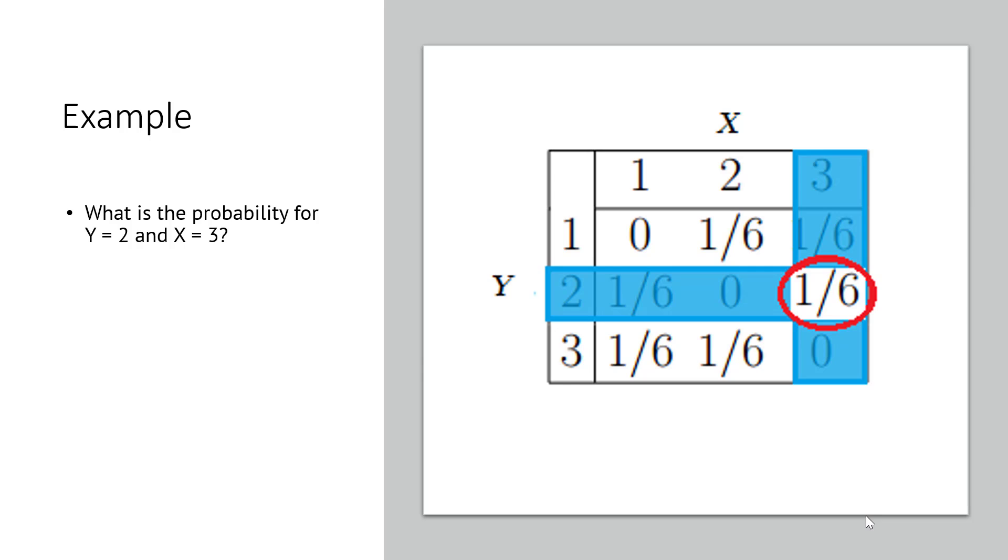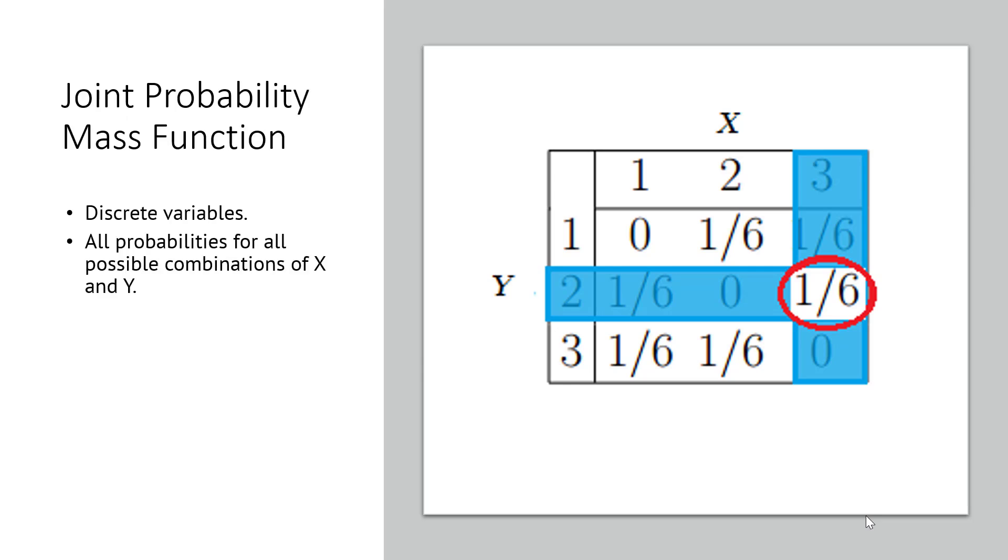You might also come across the joint probability mass function. If your variables are discrete, like those in the table—Y equals 1, Y equals 2, those are discrete counts—the distribution can be described by a joint probability mass function.